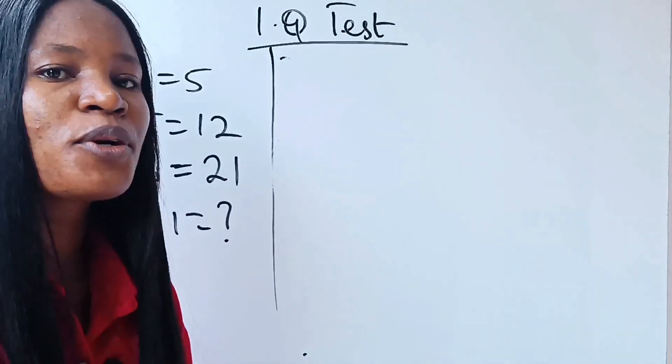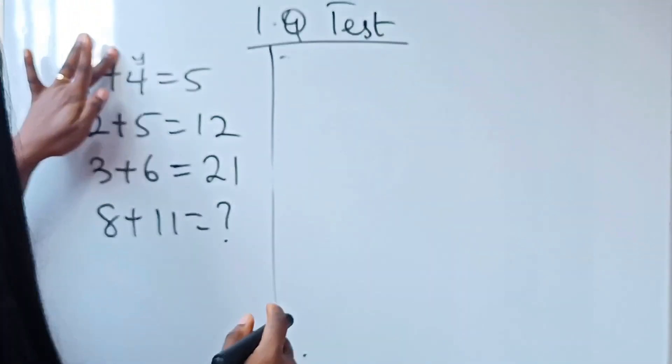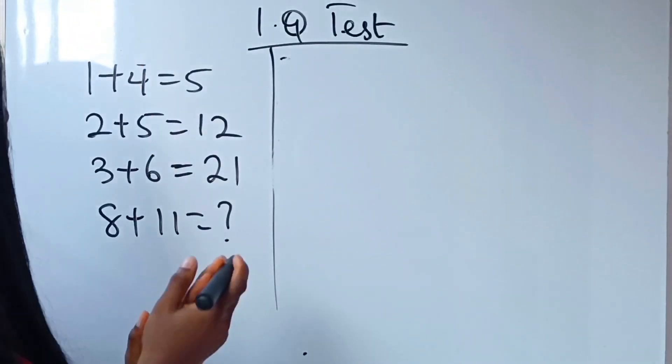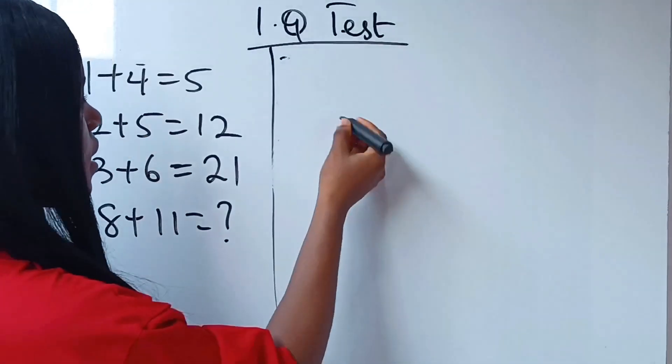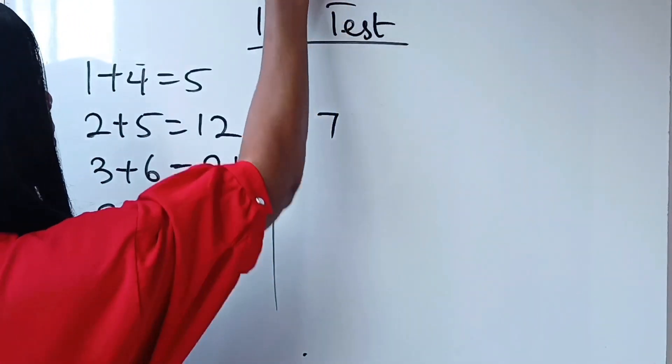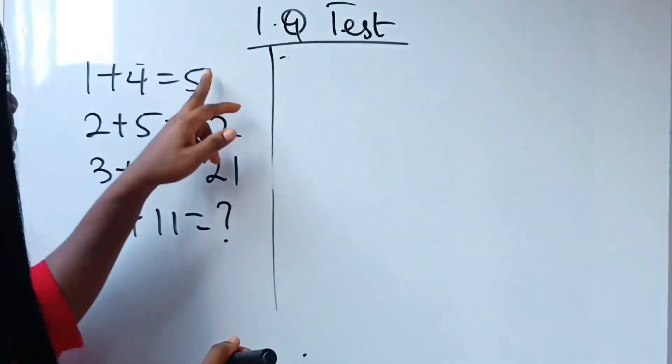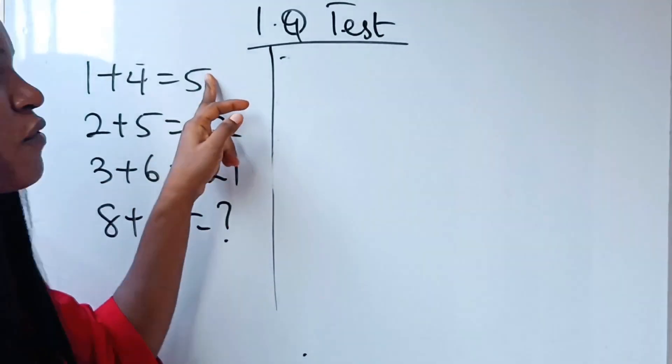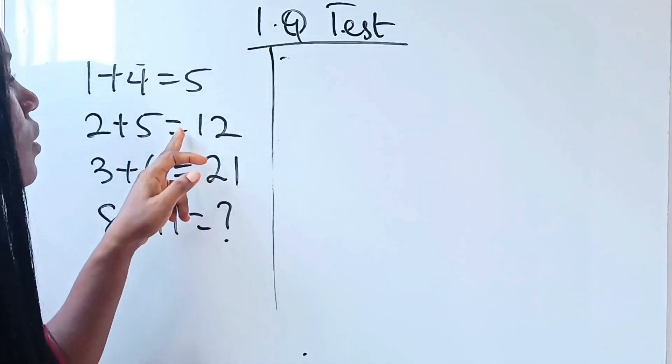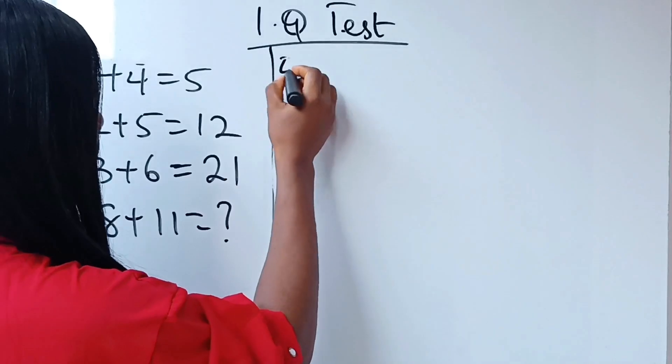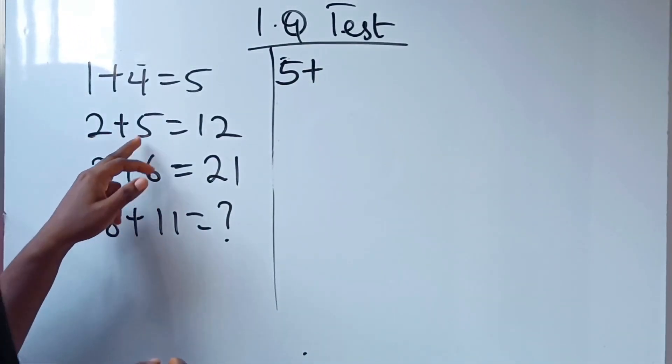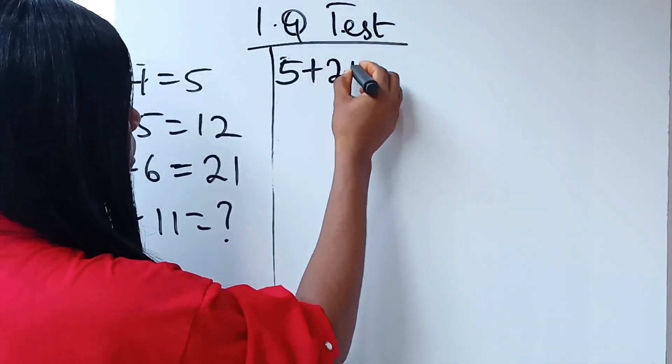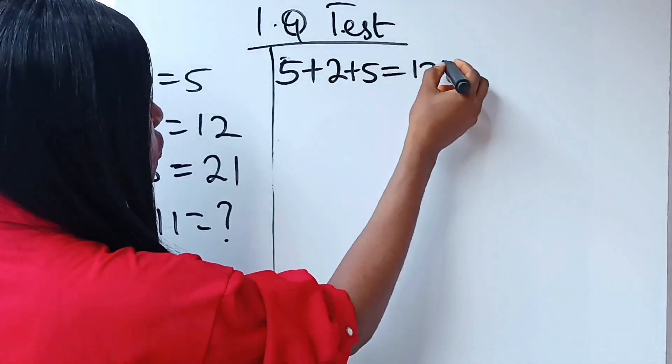Now the second group said, no, this is how the result is gotten. 2 plus 5 will give us what? 7. Now this is what they did. This 5, that is the answer following the equation. They brought it out, 5. And they added it to this and this, that is 2 plus 5. And they gave them 12.